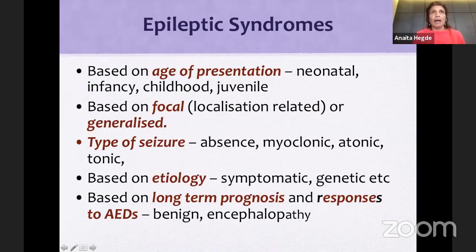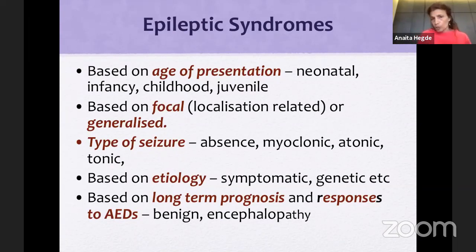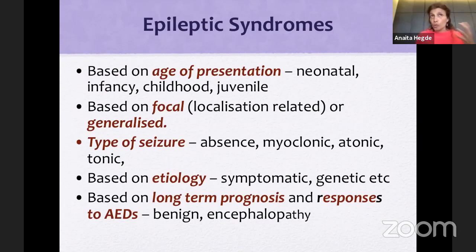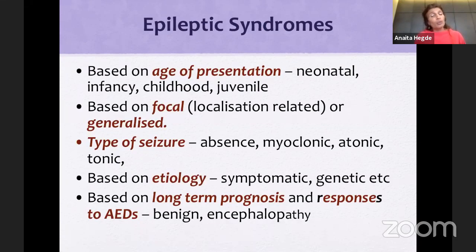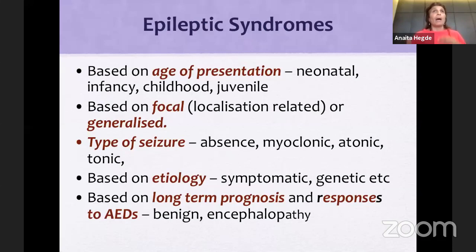What is a syndrome? When it presents at a certain age — neonatal, infancy, childhood, or juvenile — it has a certain type of seizure, either focal or generalized. If generalized, the seizure can be absence, myoclonic, atonic, or tonic. Depending on etiology, if there's an underlying pathology it's called symptomatic; if there isn't, very often it is genetic. With the syndrome diagnosis, I can tell you the long-term picture: will he recover, will cognition go down, will there be academic problems, which is the best drug, and how long does he need treatment?